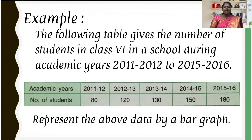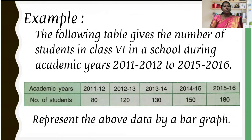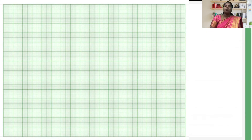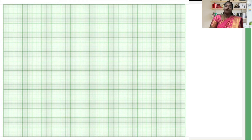Let us now look at one example and understand how to draw a bar graph for the given data. The following table gives the number of students in class 6 in a school during academic years 2011-2012 to 2015-2016. We need to represent the given data by a bar graph. The use of graph paper is more convenient, so let us use graph paper. To visually represent the data using a bar graph, we need to follow a few steps.